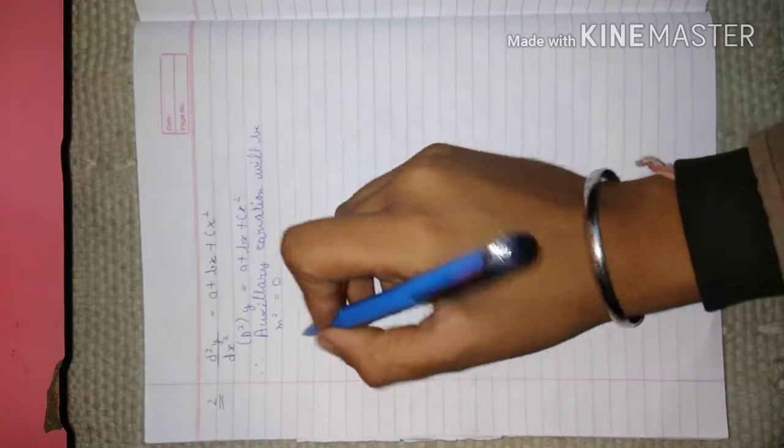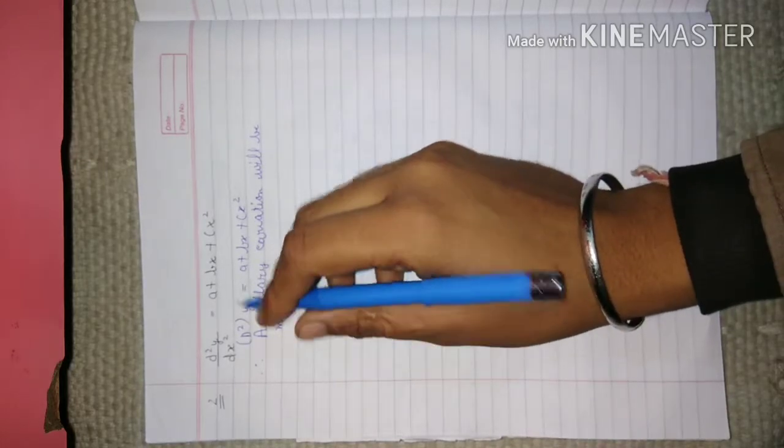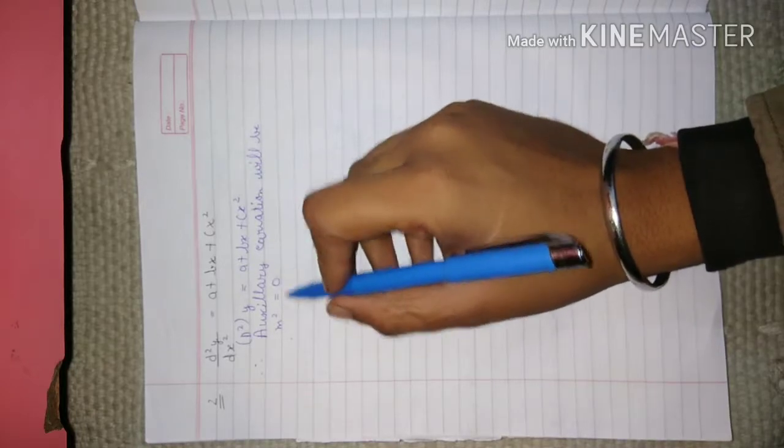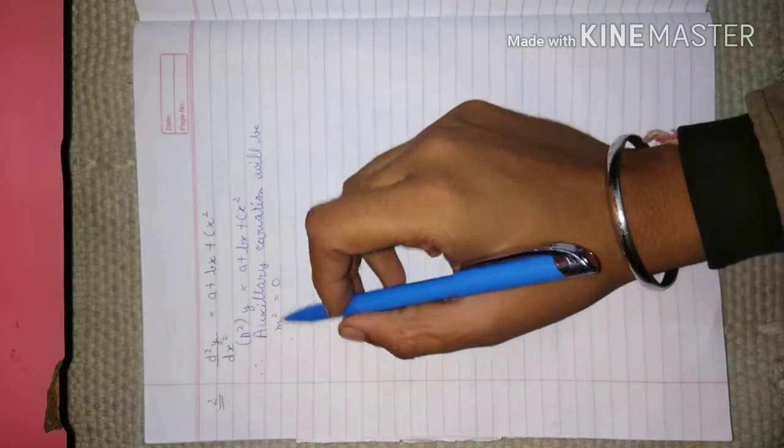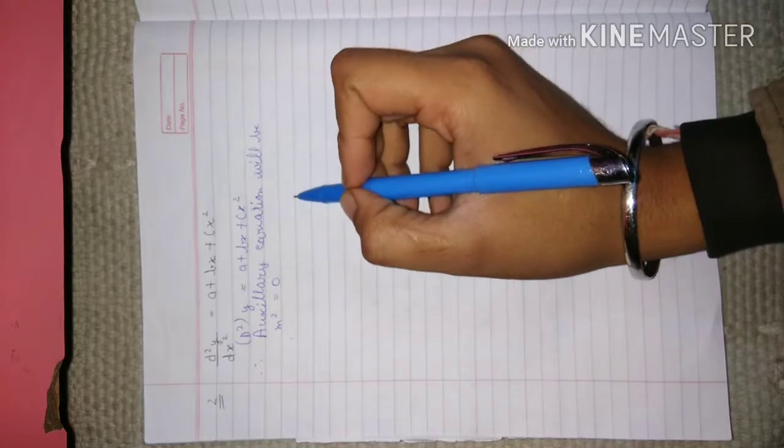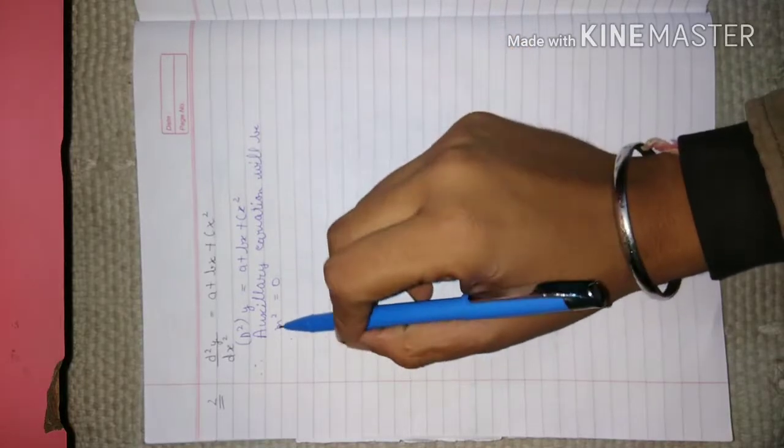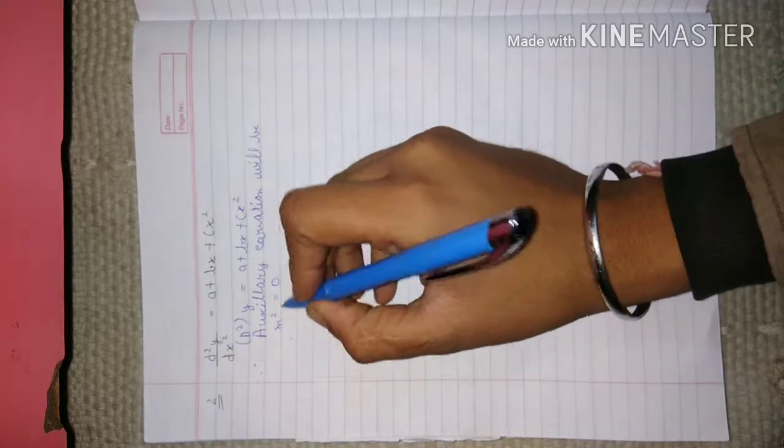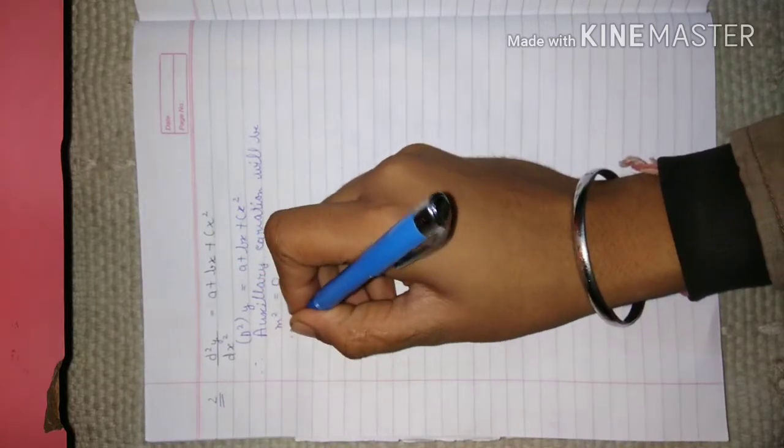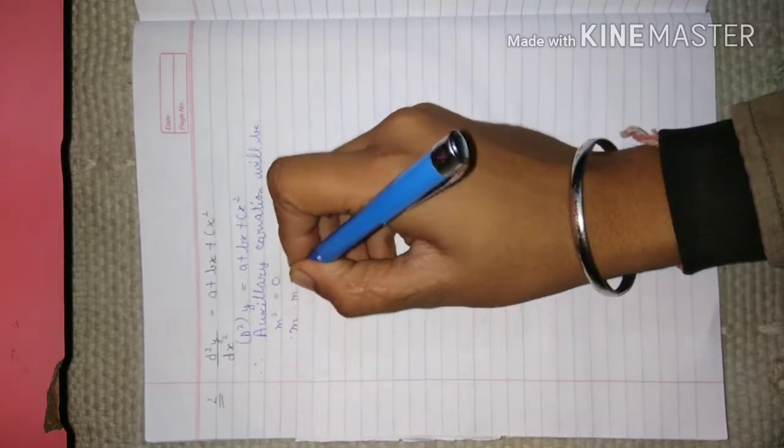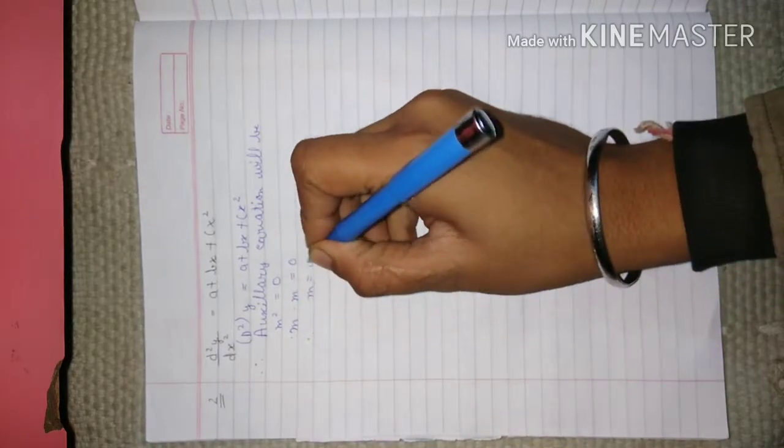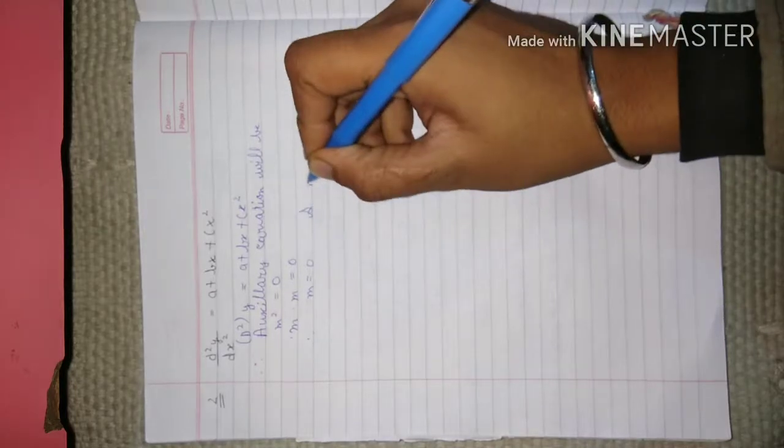Generally what students do is they simply write m² = 0 implies m = 0, therefore its root will be 0. They consider it as a single root, but there are two roots. We can write it as m × m = 0, therefore m = 0 and m = 0.